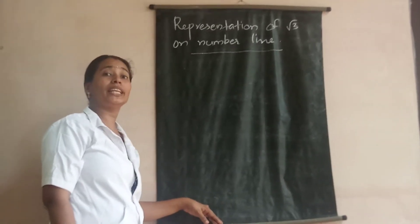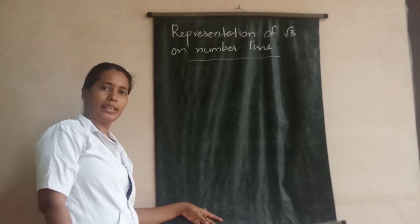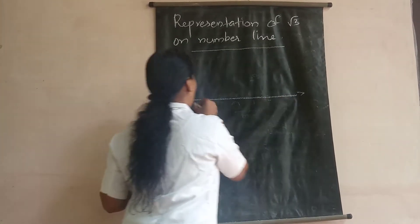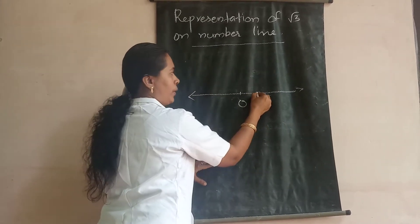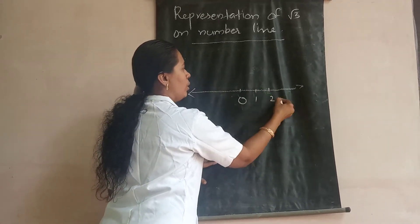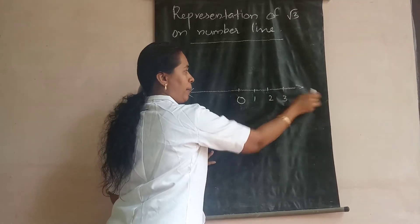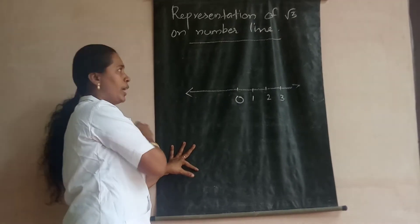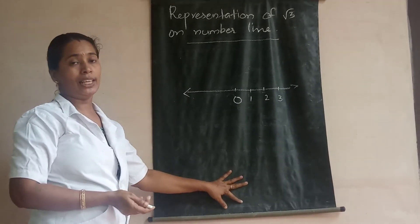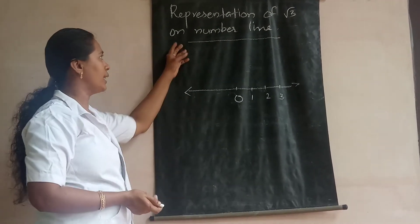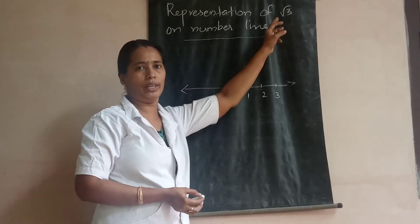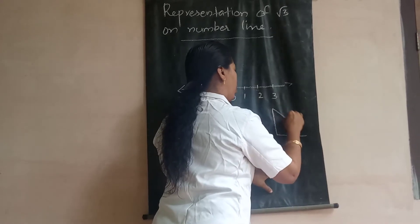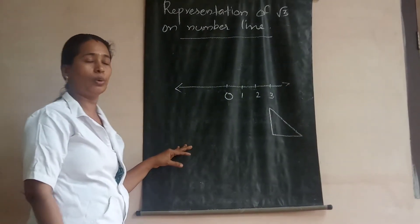Next: representation of root 3 on a number line. Same method. First draw a number line, mark 0 in the middle, then 1, 2, 3, etc. on the right and the negatives on the left. In the previous case it was root 2, but in this case we need root 3. We need Pythagoras theorem to get the value of root 3.